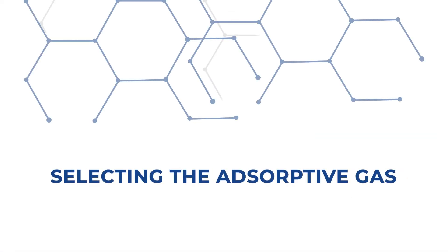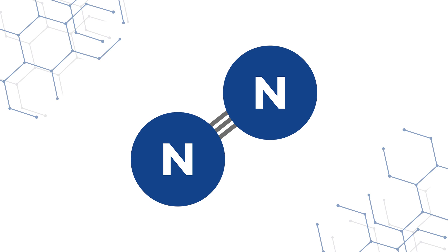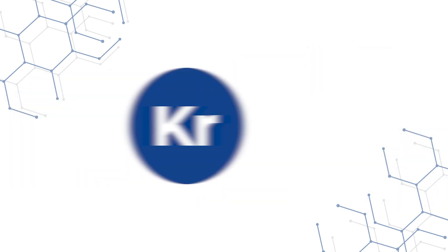Let's start with the first tip: selecting the adsorptive gas. Nitrogen is the most commonly used adsorptive gas for the BET measurement, and krypton is often used for low surface area materials.